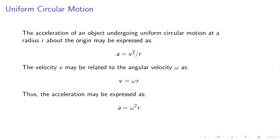Uniform circular motion. Acceleration of an object undergoing uniform circular motion of radius r, but the origin may be expressed as a equals v squared over r. The velocity may be related to the angular velocity omega as v equals omega r, plus the acceleration may be expressed as a equals omega squared r.